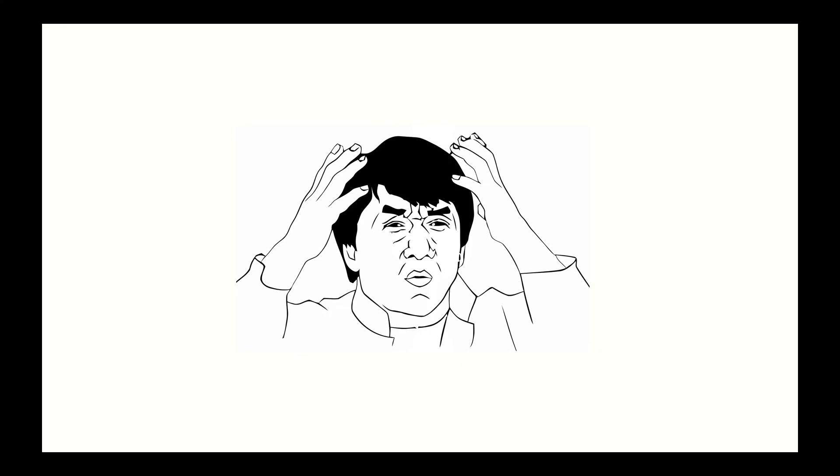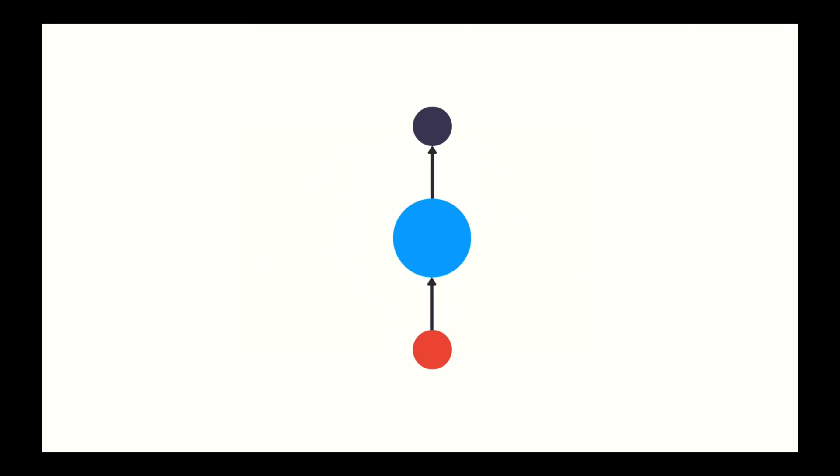Alright, so RNNs have this abstract concept of sequential memory, but how the heck does it replicate that concept? Well, let's look at a traditional neural network, also known as a feed-forward neural network. It has an input layer, hidden layer, and output layer. How do we get a feed-forward neural network to be able to use previous information to affect later ones?